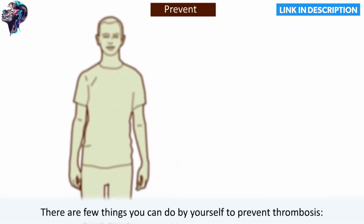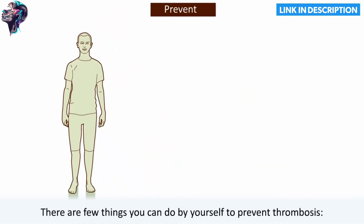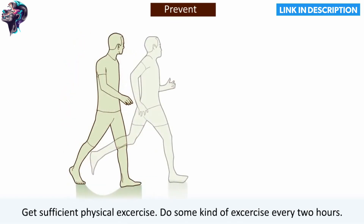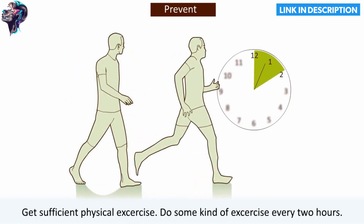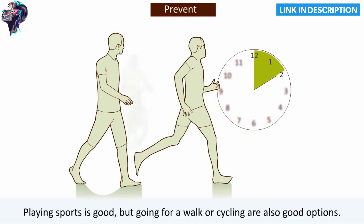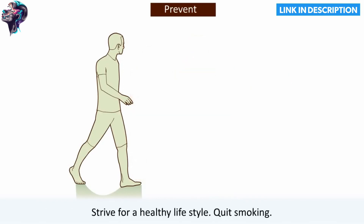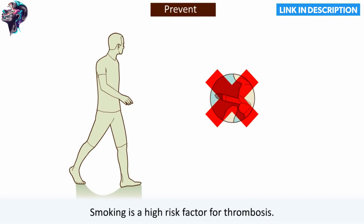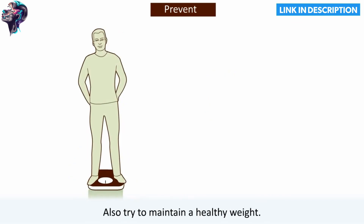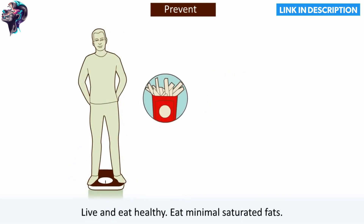There are a few things you can do yourself to prevent thrombosis. Get sufficient physical exercise — do some kind of exercise every two hours. Playing sports is good, but going for a walk or cycling are also good options. Strive for a healthy lifestyle: quit smoking, as smoking is a high risk factor for thrombosis. Also try to maintain a healthy weight and eat healthily, with minimal saturated fats and plenty of fruits and vegetables.